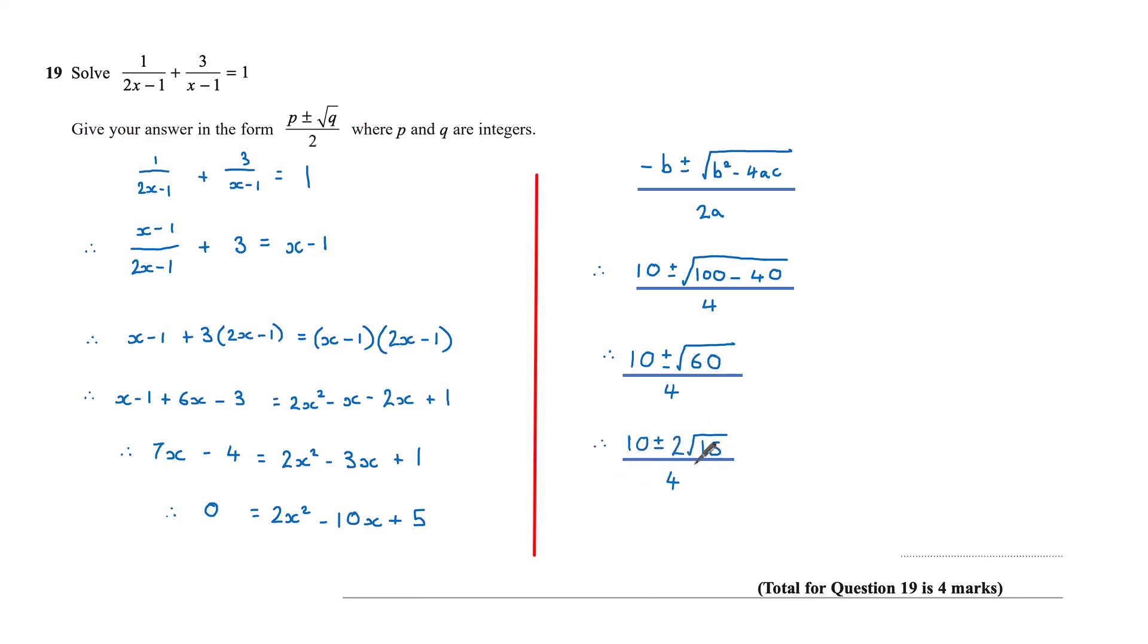I can now divide numerator and denominator by 2, and I'm left with 5 plus or minus root 15 over 2. This is in the form I wanted, where p is 5 and q is 15.